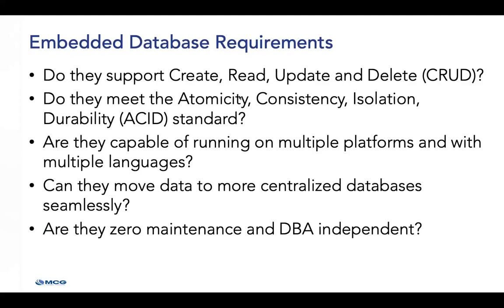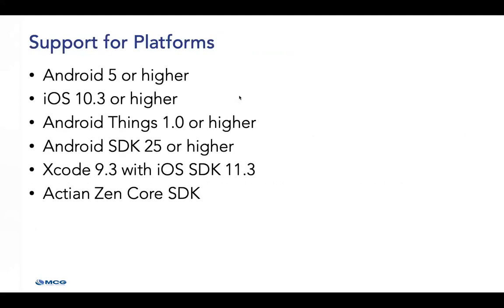While these embedded databases need to act independently at the device level, it is crucial to recognize they are not just silos of data — they are part of a network of devices. At least some of the data is transmitted and integrated into higher-level databases for further action. One of the embedded database requirements is support for multiple platforms. Actian Core is a NoSQL embeddable zero-DBA self-tuning database for smartphones and other IoT devices requiring a small footprint, with a minimum of two megabytes, and supports all the platforms they list.